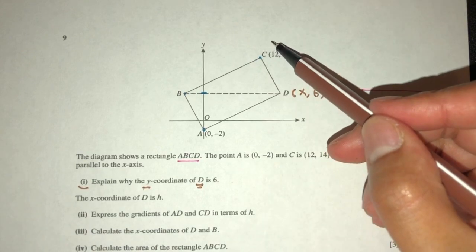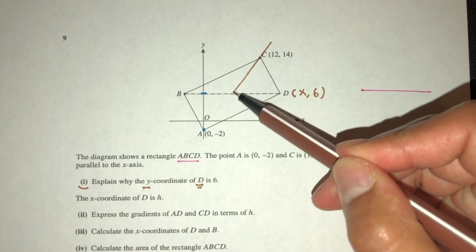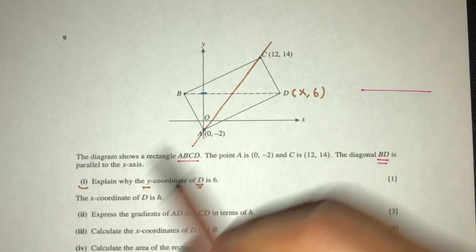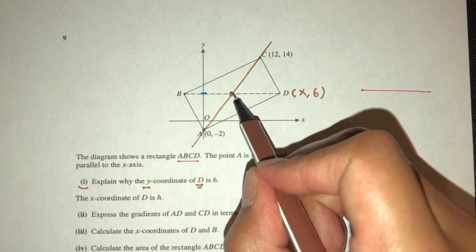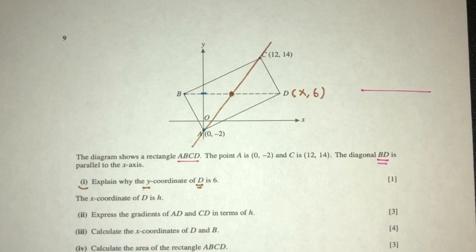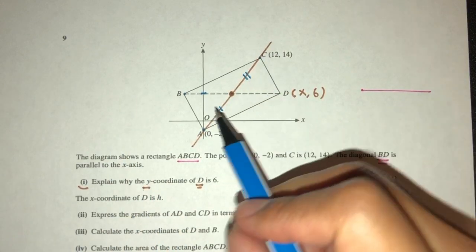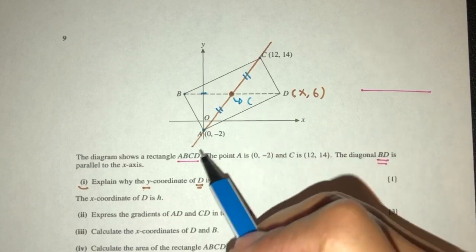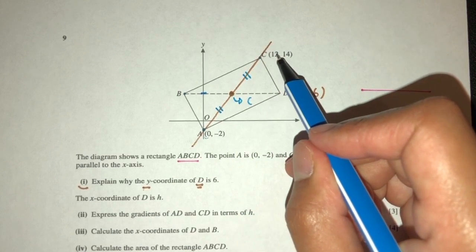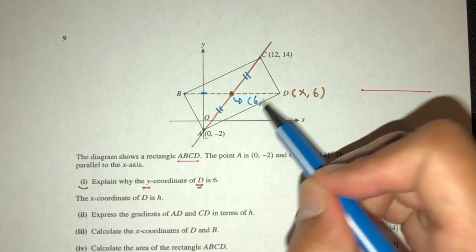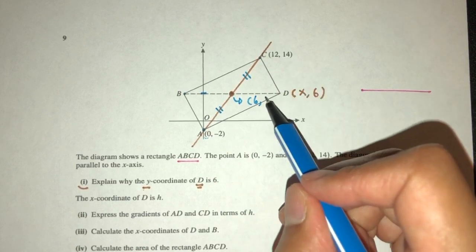We understand that if you want to join the line AC, we'll also have a diagonal. Now, where they meet over here is actually the midpoint of AC. So what is that point? That would be this plus this divided by 2, that should be 6. And this plus this divided by 2 should be 6 as well.